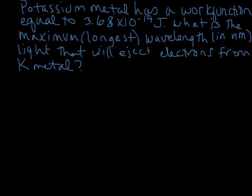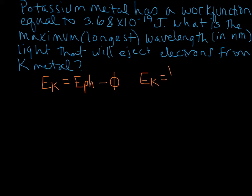So how do we do this? I'm going to start by writing down our equation. The kinetic energy of the ejected electrons is going to be equal to E photon — that's the energy of our photon — minus the work function. And remember, if the energy of our photon is larger than the work function, then electrons will be ejected. Now in this case, we also want the threshold wavelength, so I'm going to plug that in for E photon. We want the longest wavelength that will still eject electrons — the least energetic photon that will eject electrons.